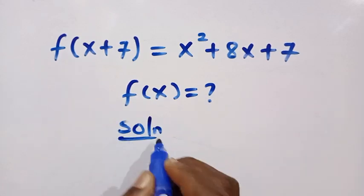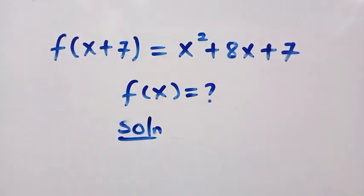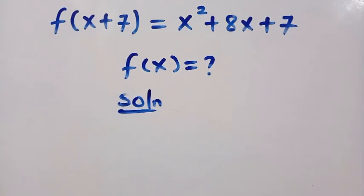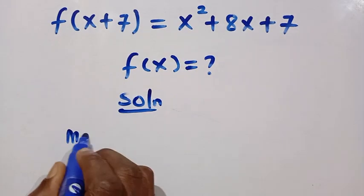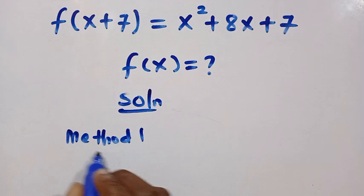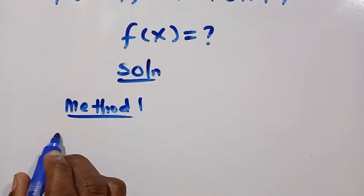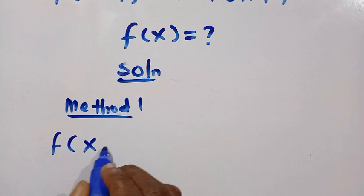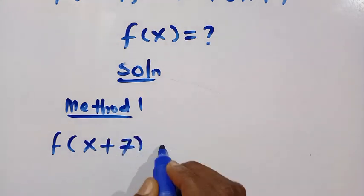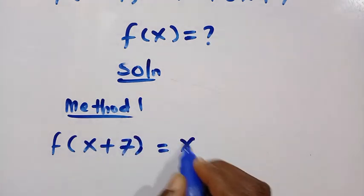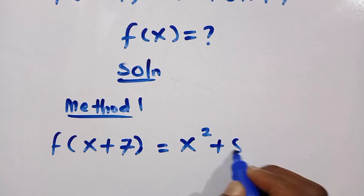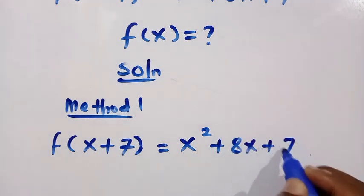I'm going to be solving this functional equation in two different ways. Let's see the first method. Consider this as Method 1. So from the given question, we have f(x+7) = x² + 8x + 7.